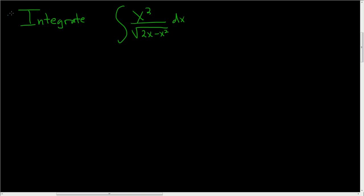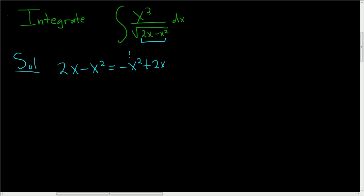We're being asked to integrate this, so the first thing we'll do is complete the square. Let's write this as 2x minus x squared — or written backwards, negative x squared plus 2x. Before completing the square, the number in front of the x squared has to be 1, so we'll factor out a negative 1. This becomes negative times x squared minus 2x, because minus times minus gives a positive.